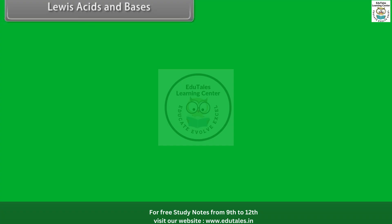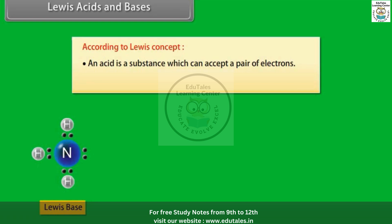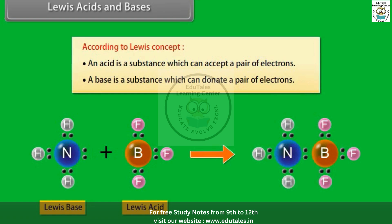Lewis acids and bases: According to the Lewis concept, an acid is a substance which can accept a pair of electrons, and a base is a substance which can donate a pair of electrons. For example, in the reaction, BF₃ acts as an acid.